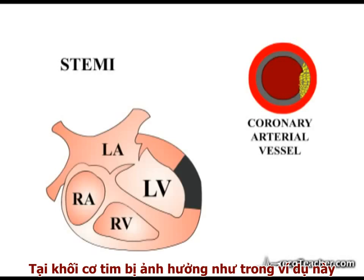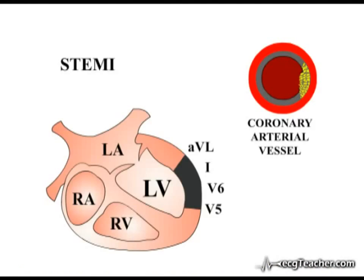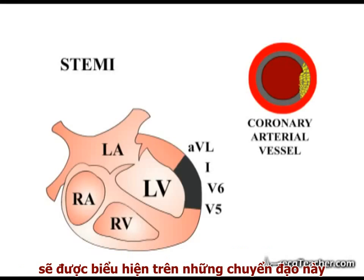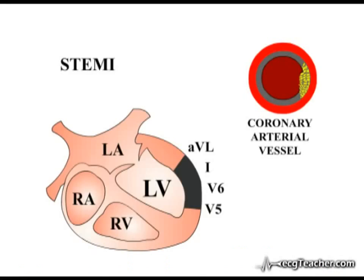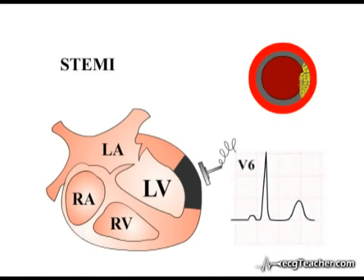As the region of myocardium affected in this example lies directly under leads V5, V6, lead I, and AVL, the ECG changes we are about to discuss are observed in these leads. We will examine these changes in lead V6 as an example.